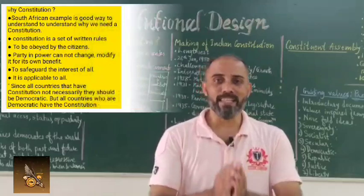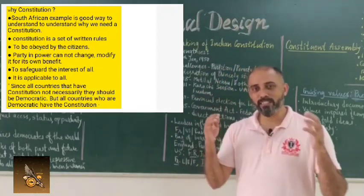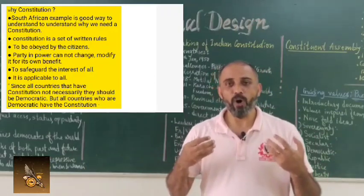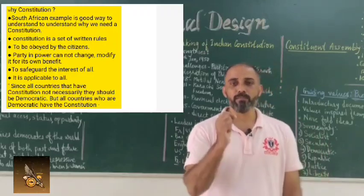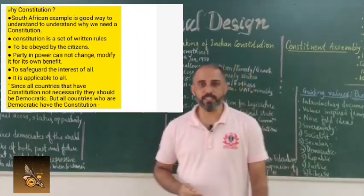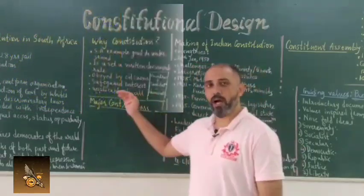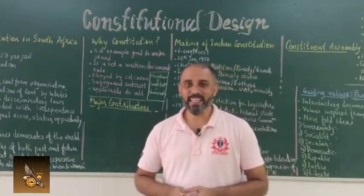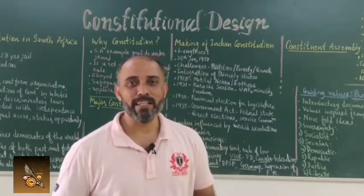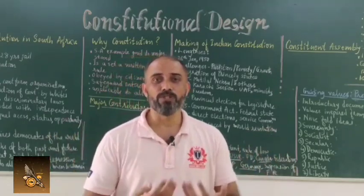This example of South Africa is one of the best examples to understand why every country needs a constitution. A constitution is a set of rules and regulations - a set of documents as per which the whole country functions. The government, all institutions, and all individual citizens obey the rules made by the constitution. This is the most important feature of any constitution. Constitutional design thus safeguards the interest of an individual and gives equal opportunity to grow and improve their standard of living. Countries with a constitution and democratic values have more chances of functioning smoothly.